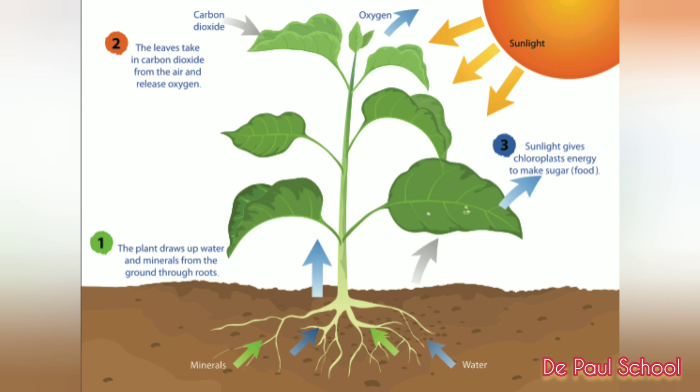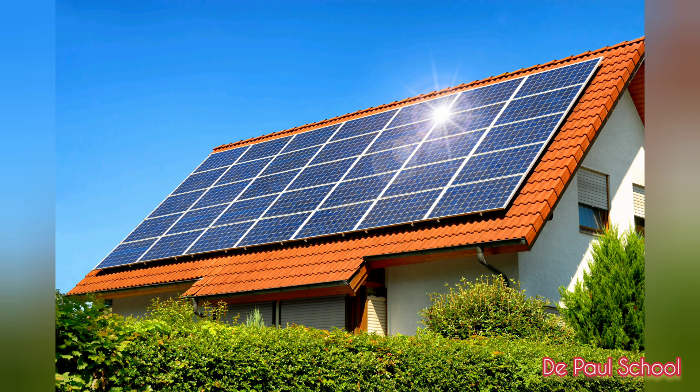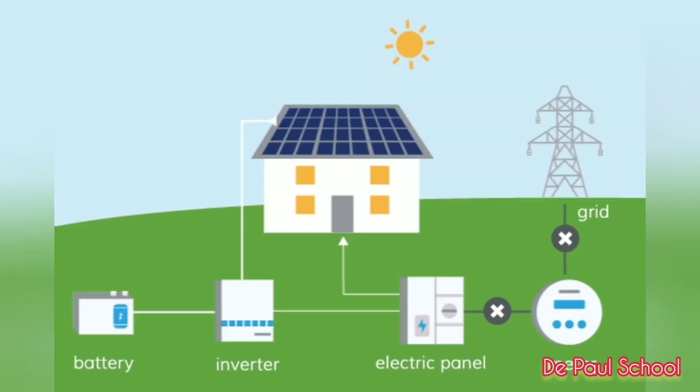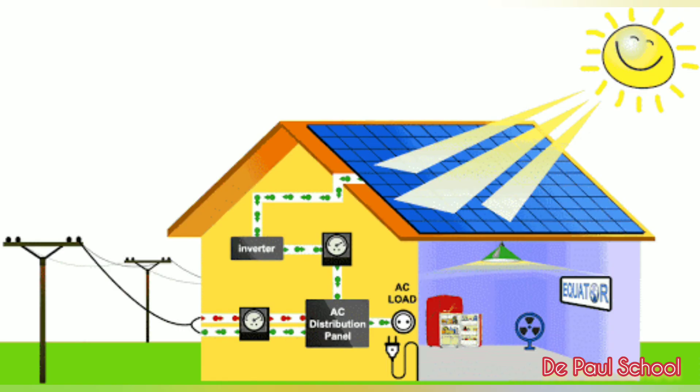Solar energy is also used by solar cell panels. Solar cell panels are used to convert this energy into electricity. So the solar energy is converted into another form of energy — electricity — and is used to light lamps, operate fans, and many other works.